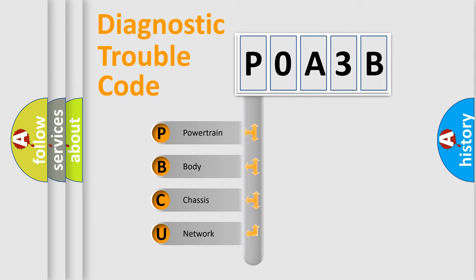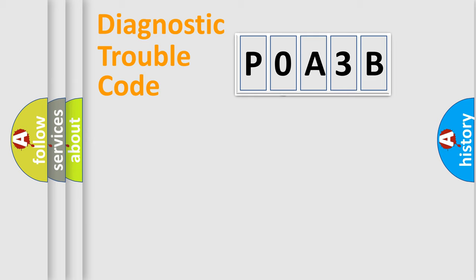We divide the electric system of an automobile into four basic units: Powertrain, Body, Chassis, and Network. This distribution is defined in the first character code.